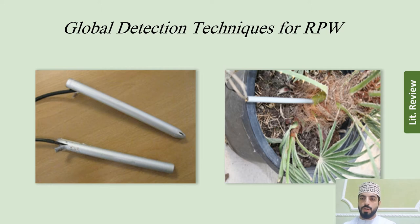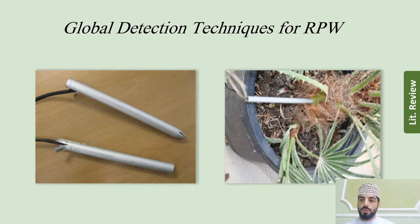The most common technique used to detect red palm weevil is the acoustic sensor system, because the system can capture the sounds of red palm weevil activity inside the palm trunk. This device consists of an audio probe inserted into the palm trunk to detect the sounds produced inside. In our project, we used electromagnetic sensors — specifically microwave — to detect the red palm weevil insect, which we will discuss in chapters 3 and 4.